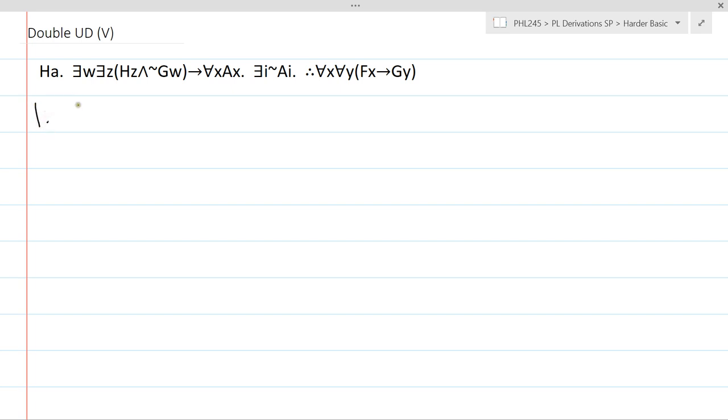So this is nothing special to this question. You always start with writing the show line as per normal, for all x, for all y, fx arrow gy.